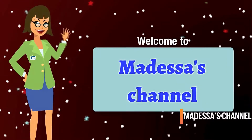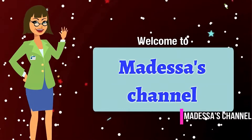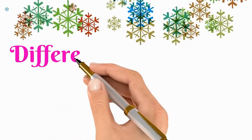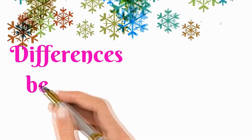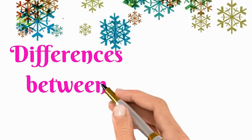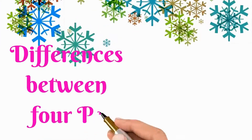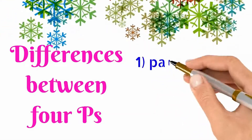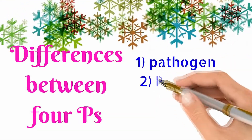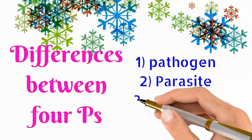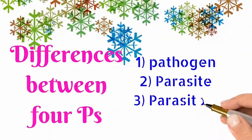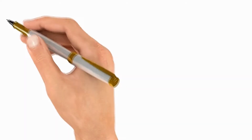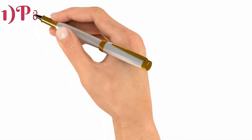Welcome back to Marissa's channel. In this video we are going to talk about the differences between the four P's. Do you know what these four P's stand for? These four P's stand for pathogen, parasite, parasitoid, and predator. So let's discuss them one by one.